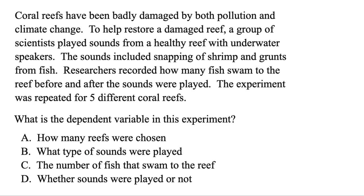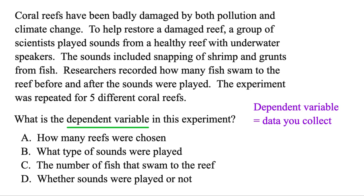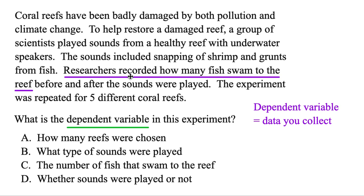The next one's asking what is the dependent variable in this experiment. The dependent variable — that's the data you collect. Coral reefs have been badly damaged by both pollution and climate change. To help restore a damaged reef, a group of scientists played sounds from a healthy reef with underwater speakers. The sounds included snapping of shrimp and grunts from fish. Researchers recorded how many fish swam to the reef before and after the sounds were played. Because researchers recorded that's the data they collect — how many fish swam to the reef. So it's got to be C, and that's the dependent variable.